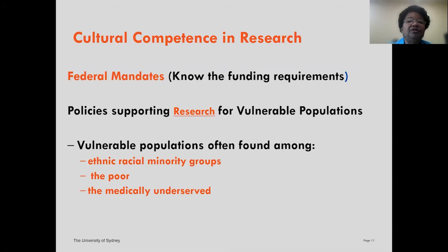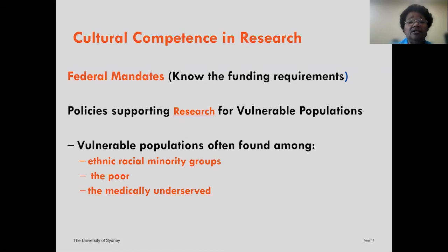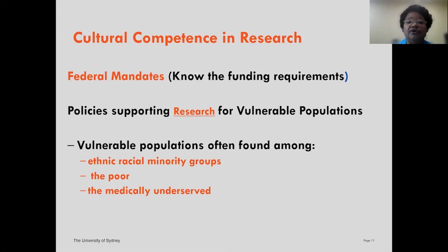Cultural competence in research is elusive to define, so it's important to know the funding requirements, because they often mandate guidelines for which groups should be included in your research. Policies frequently support inclusion of vulnerable populations — in the U.S., these are often ethnic and racial minority groups, the poor, which is often women and children, and the medically underserved. We have an increased responsibility as researchers to protect these groups as vulnerable populations.